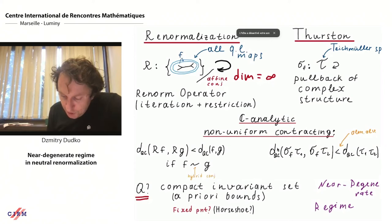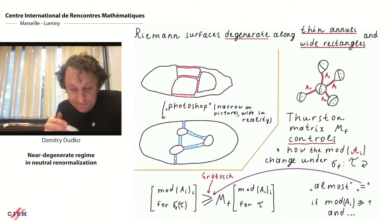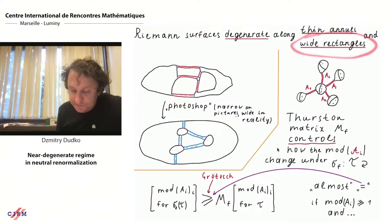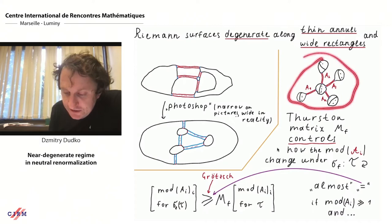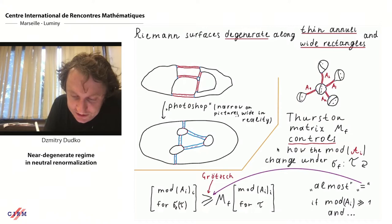I'd like first to summarize what is known about the near-degenerate regime for the Thurston–Hubbard quadratic-like renormalization theory, and then move to the neutral renormalizations. A fundamental fact about Riemann surfaces is that they degenerate along thin annuli — one should write thin rectangles. A familiar case is compact Riemann surfaces, perhaps punctured by finitely many points. In that case the surface degenerates along thin annuli, which is called the thin-neck decomposition.